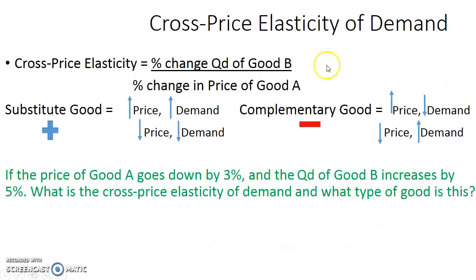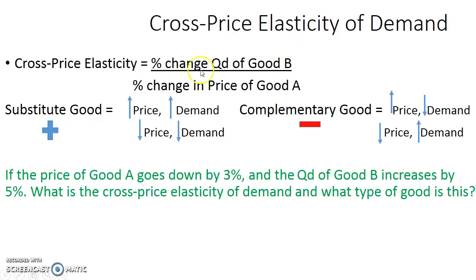Now let's look at the cross-price elasticity of demand. Here you're looking at the percentage change in the quantity demanded of one good relative to the percentage change in the price of another good. This is different from regular price elasticity, which involves only one good. Cross-price elasticity tells us whether the two goods are substitutes or complementary goods.